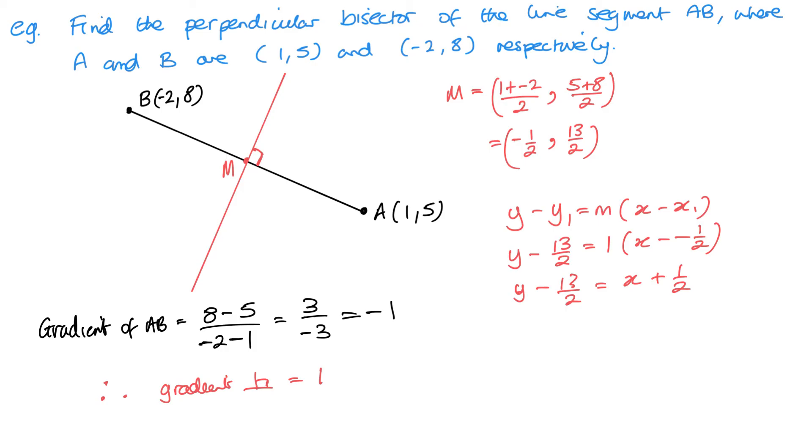Now, for those of you who have watched my videos before will know that when we're dealing with fractions, this is when I like to put it in the form of ax plus by plus c equals 0, as that's often the preferred form when you're dealing with fractions. So, I'm going to multiply through by 2. So, 2y minus 13 equals 2x plus 1. So, multiply each term there by 2. Now, I want to get them on the side where x is positive. So, we get 2x minus 2y. And then I'm adding the 13. So, that gives me plus 14.